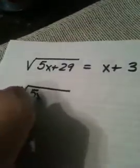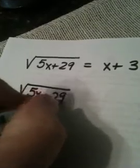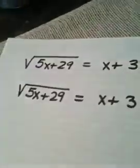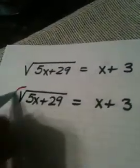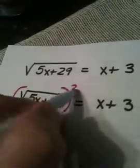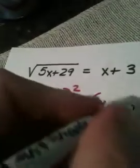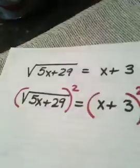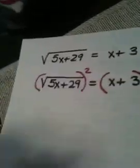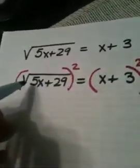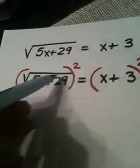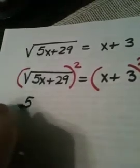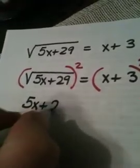Here's how I begin this problem. Remember what we did in the previous examples. Whenever I want to undo square rooting something, the inverse operation is squaring. What I do to one side, I have to do to the other. Now, the left-hand side is easy. When you square a square root, because they're inverses, they cancel each other out. So I'm just left with 5x plus 29.